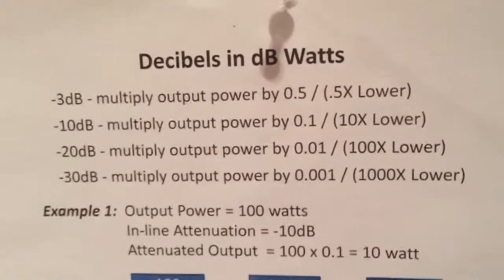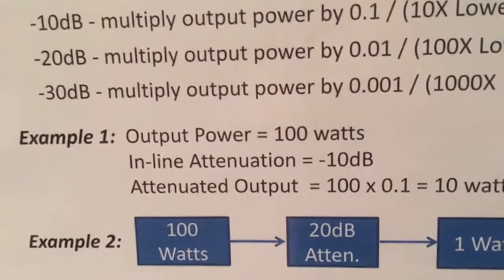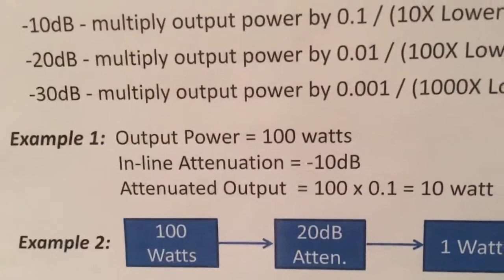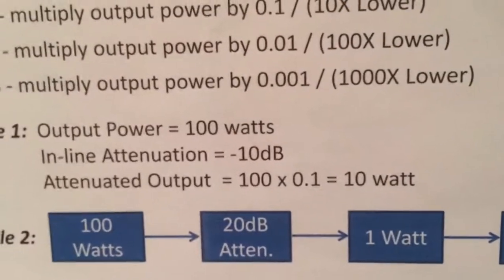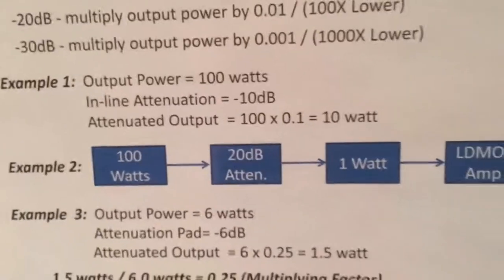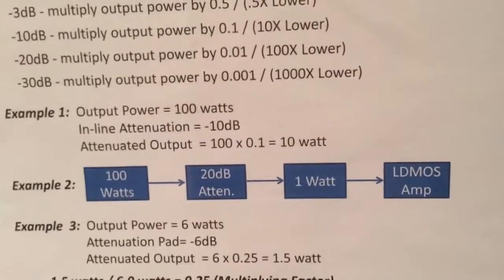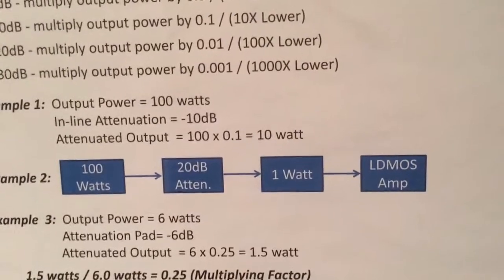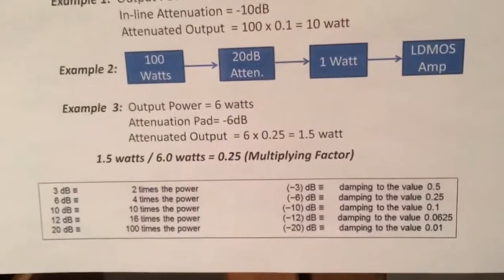Here's example one. A lot of high-powered ham radios are about 100 watts. If I have 100 watts and I use an inline attenuator which is minus 10 dB, then I have 100 watts times 0.1, which is 10 watts on the output. Example two: I have 100 watts again, this time using minus 20 dB. So 100 times 0.01 gives me one watt, and that would be suitable to drive an LDMOS amplifier.